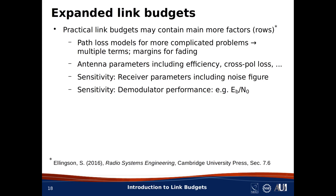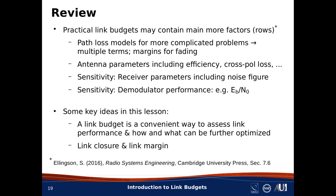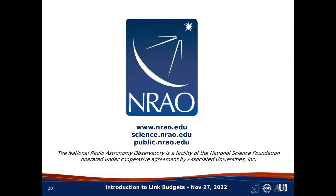If you're interested in examples of practical link budgets which include these elements, take a look at the textbook cited at the bottom of this page, which shows link budgets for a variety of practical radio systems. So, wrapping up — we've learned that a link budget is a convenient way to assess link performance, and has the nice feature that it makes clear what the relative impact of various design elements are, and which aspects of a link can be further optimized. We've also learned some new lingo, including the concepts of link closure and link margin. That concludes this introduction to link budgets. Thanks for listening.